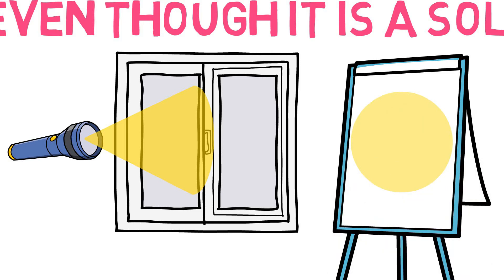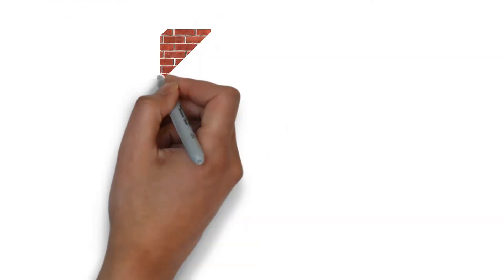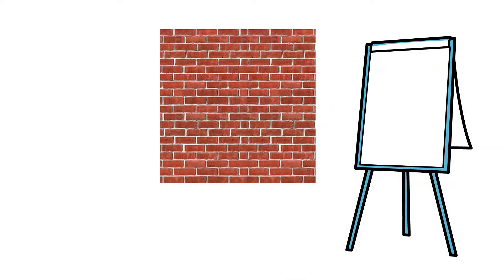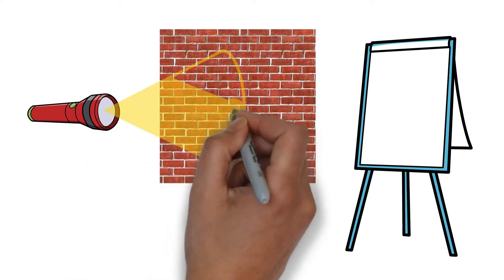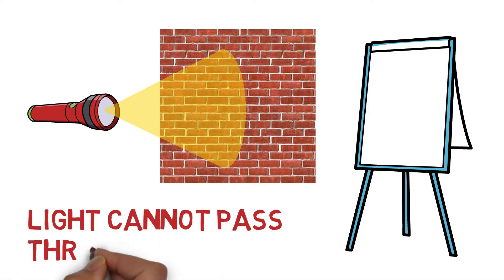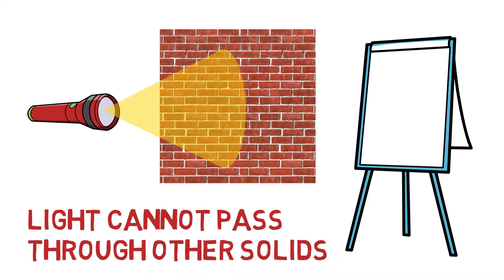But if you repeat this experiment again, this time you don't have a glass window but a brick wall. When you shine the light on the brick wall, you will see that the light hits the brick wall but does not pass through. It's blocked by the solid object and the light cannot pass through the wall.